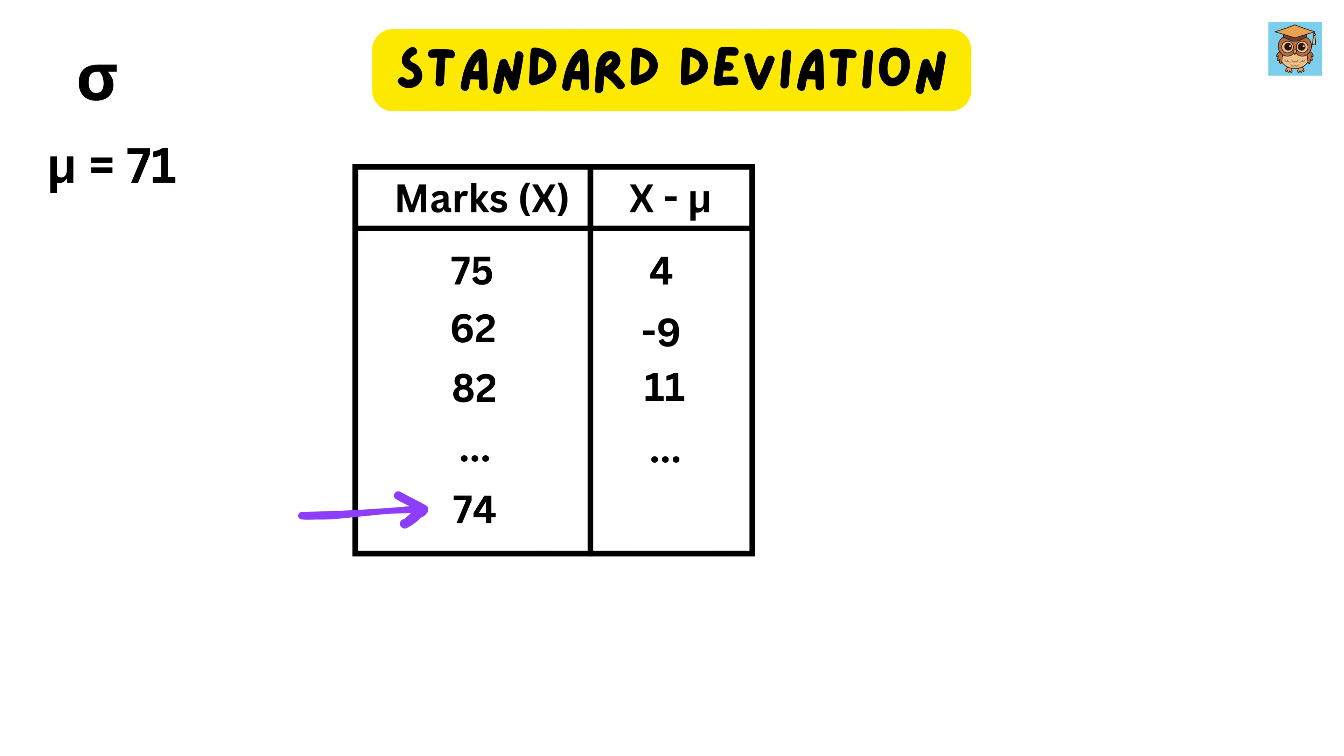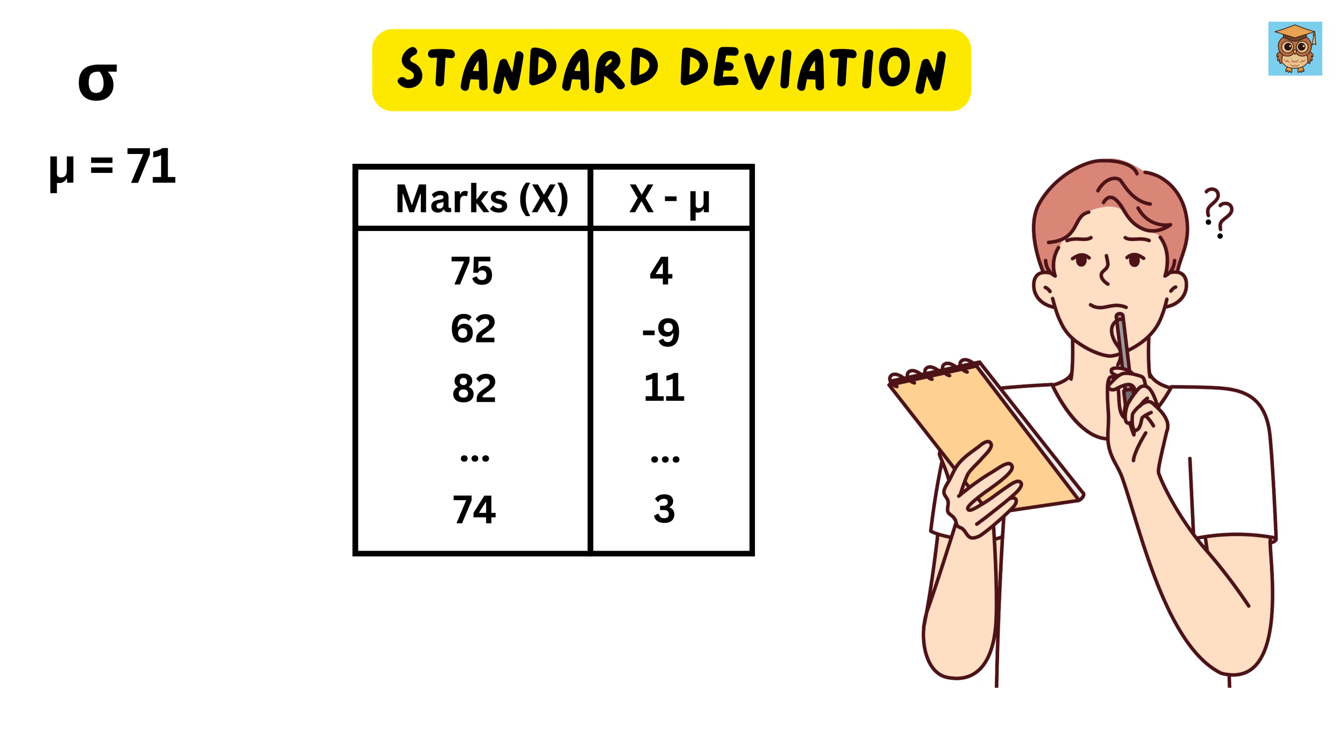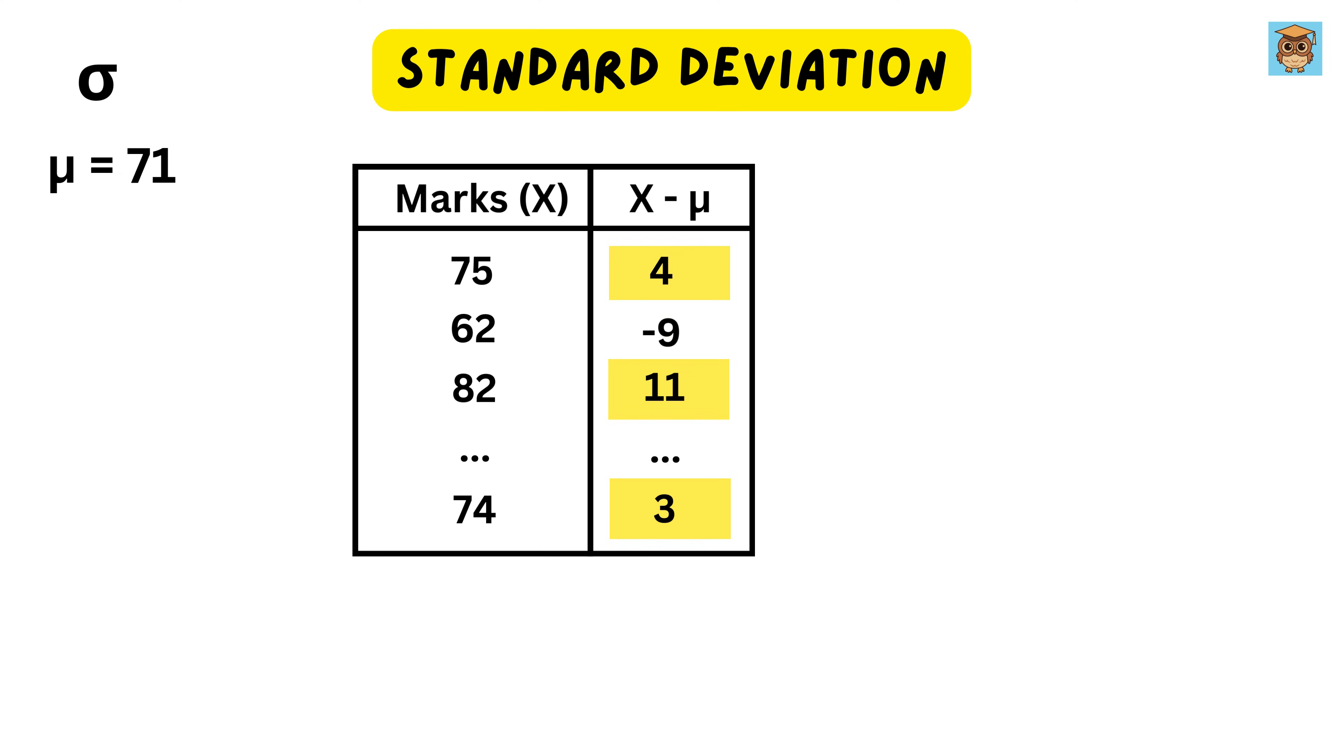For the last student, it will be 74 minus 71, or 3. At this point, you might wonder, just take the average of these differences, and we will be done, right? The problem is that some values are positive and some are negative, and if we add them up, they might cancel each other out. That's why we need the next step. To get rid of the negative signs and make sure all differences contribute equally, we square each difference. So, it will become like this.